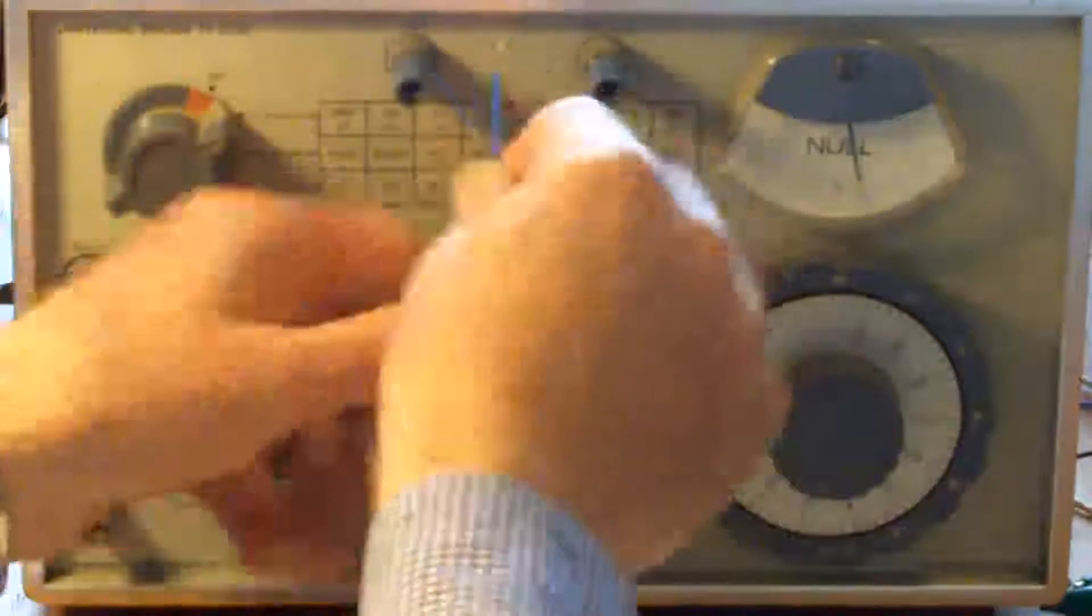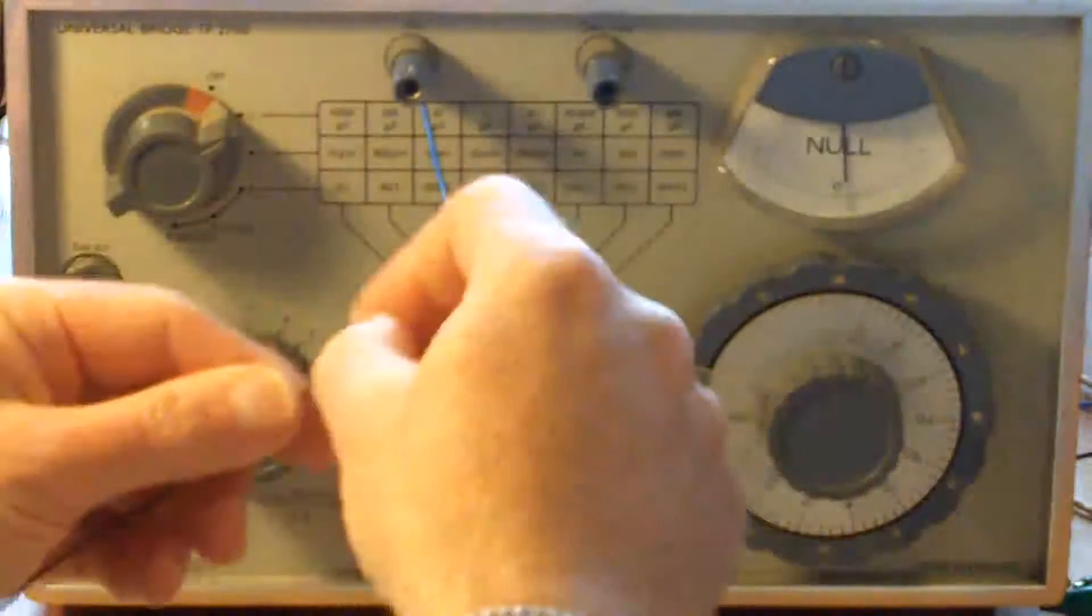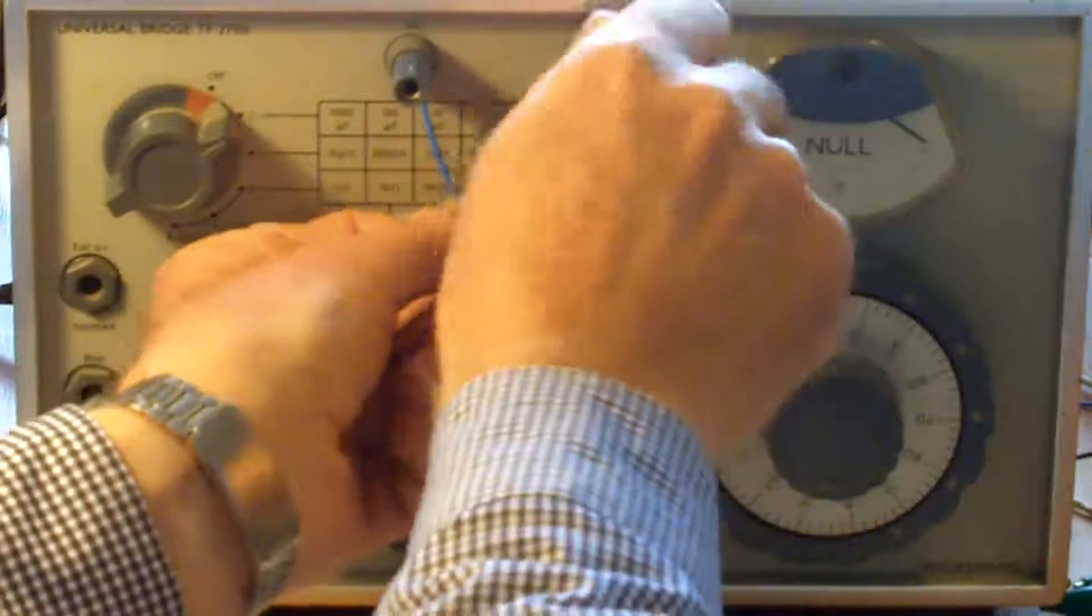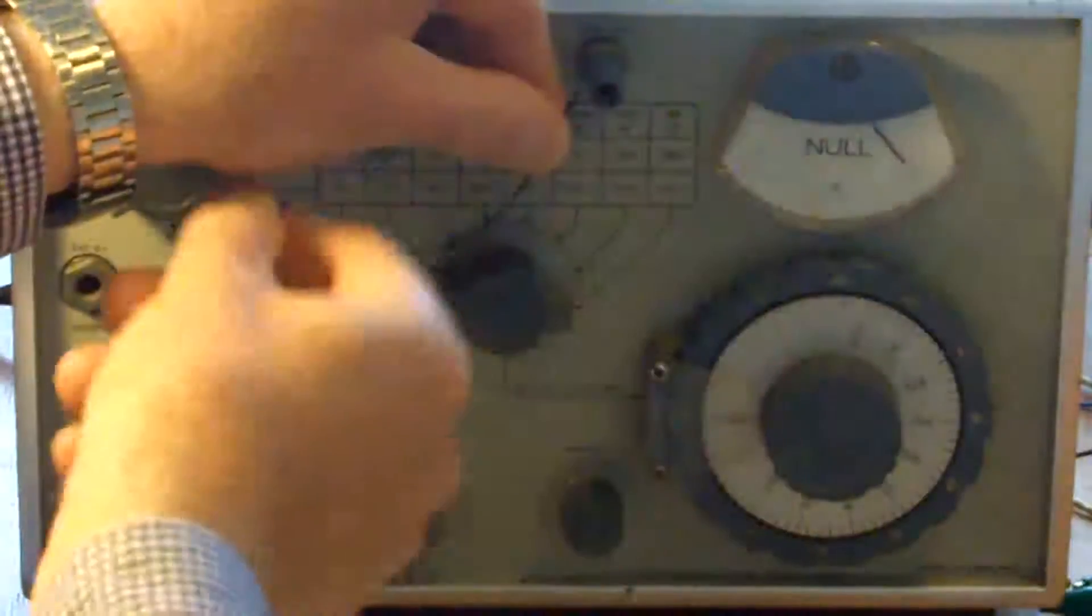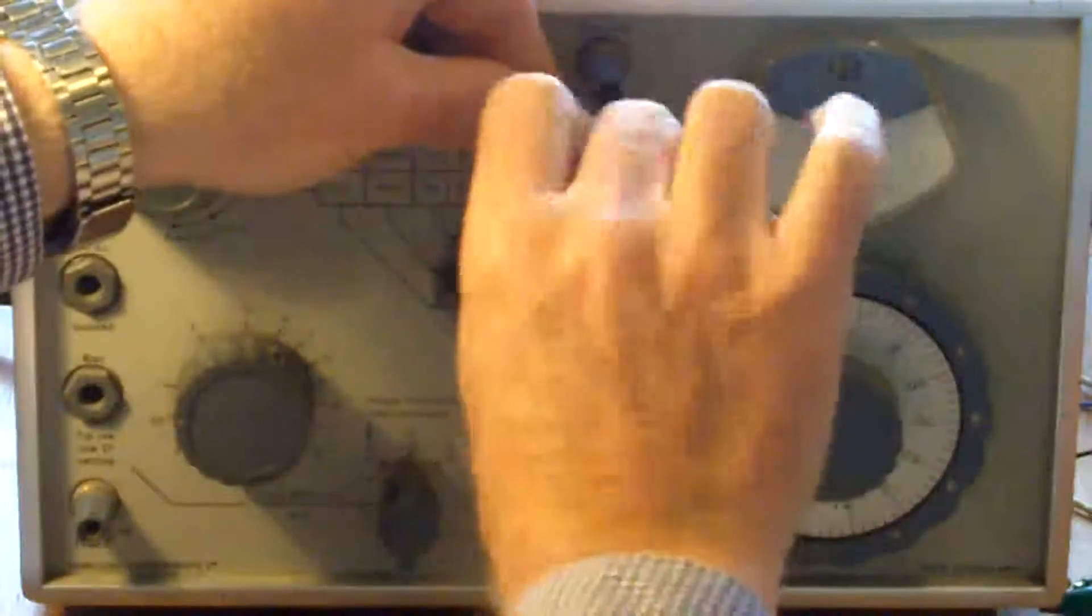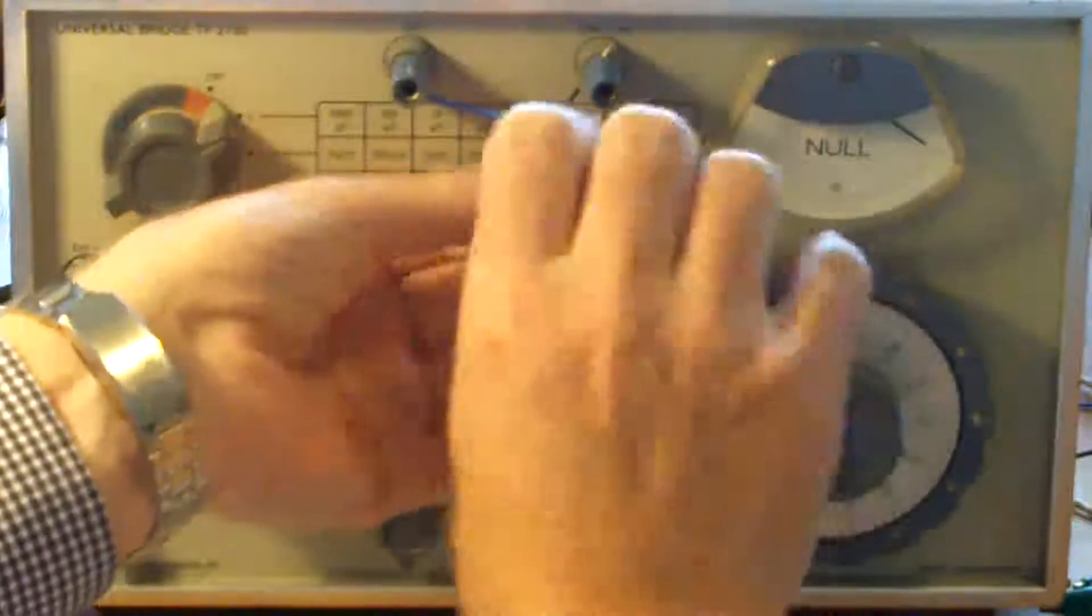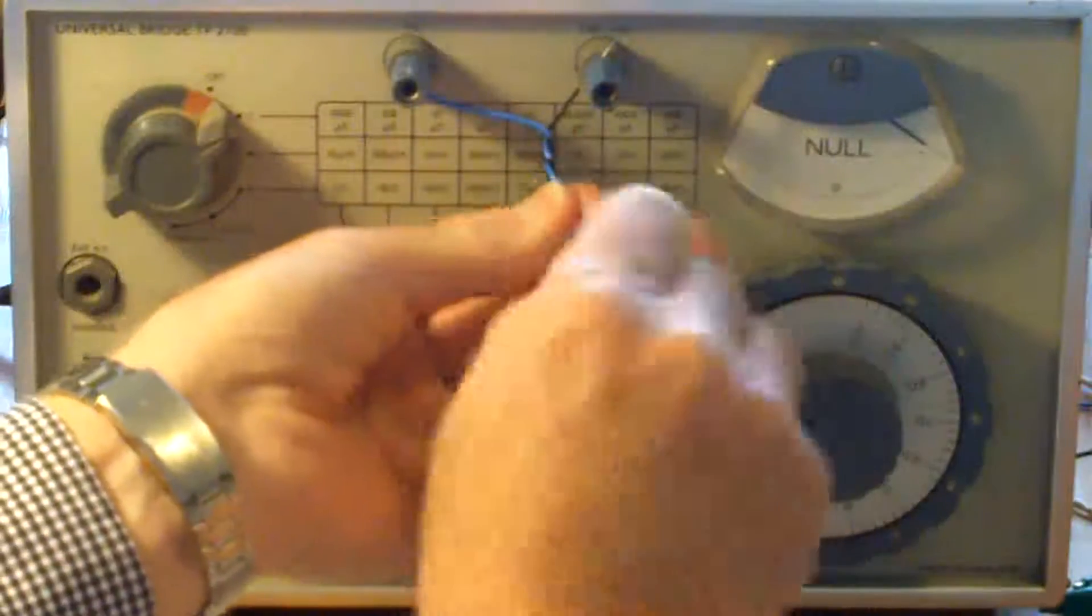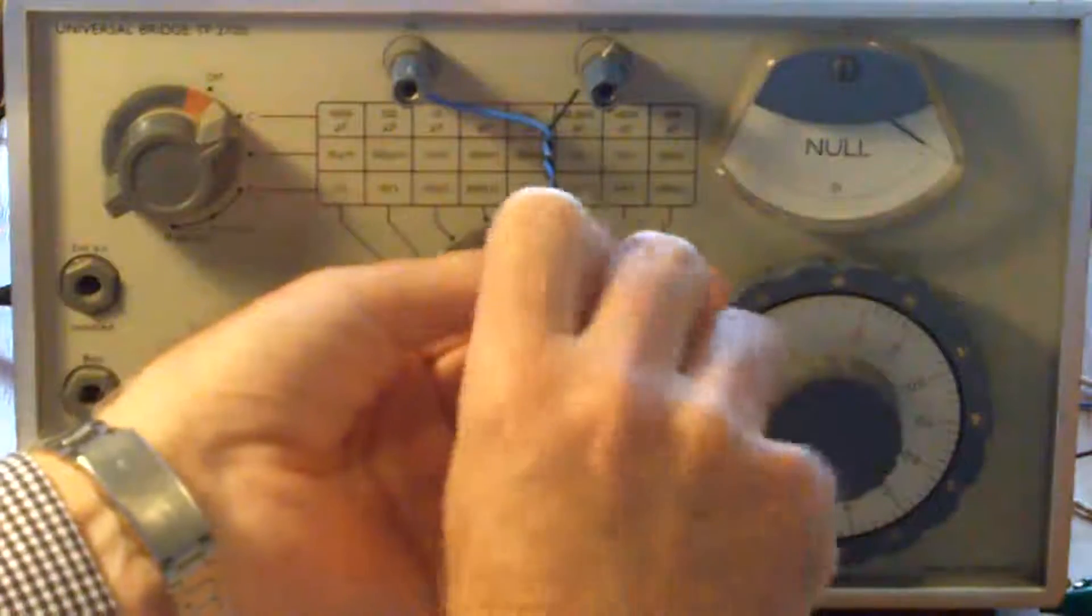But if I put a bit of wire on there, and a bit of wire on there, and I'll just twist these two together. You'll see the needle's gone off the scale there.